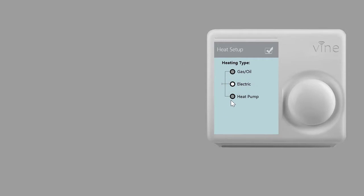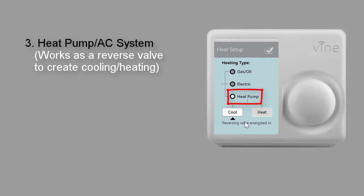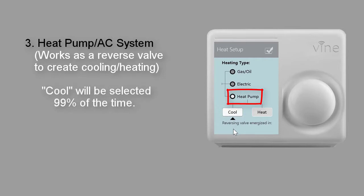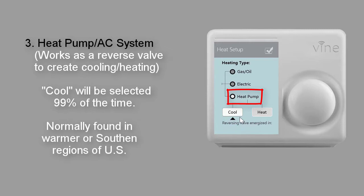The third option is the heat pump system, which is essentially your AC system with the ability to generate warm air in the room. The heat pump works as a reverse valve — the reverse valve creates the cooling air coming out while the warm air is being pumped from the inside and vice versa. The result is feeling cooler in the AC room in cooling mode. Heat pump systems are mostly used in warmer or southern regions, and therefore the majority of the time you will leave the reverse valve option on cool.